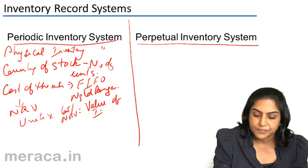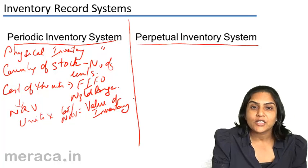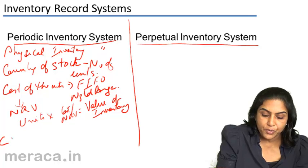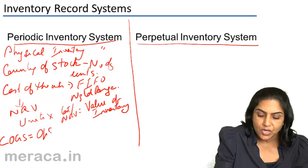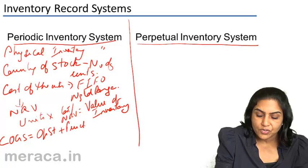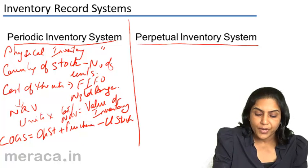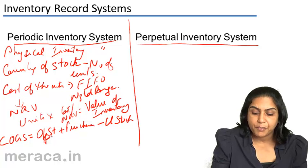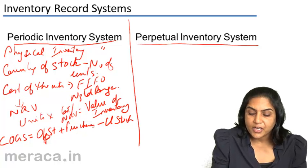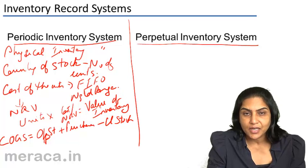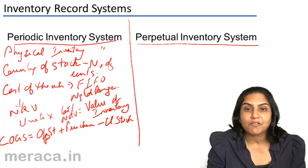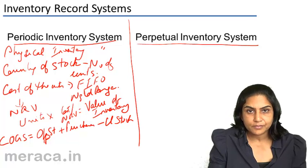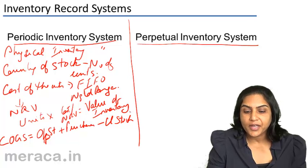The cost of goods sold is calculated as opening stock plus purchases minus closing stock. Opening stock values we would know from the opening figures. Purchases for the year, there is a complete record, and closing stock has already been ascertained by physically verifying and assigning a value to each item of inventory.